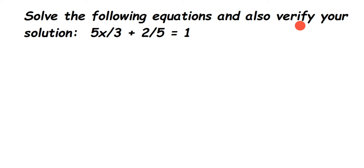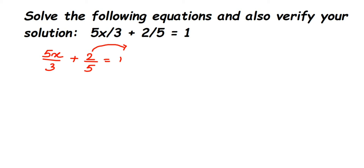Let us write down the question: we have 5x upon 3 plus 2 by 5 is equal to 1. Now we have to find out the x value. What I'm going to do is first transpose the 2 by 5 to the other side — I'm going to bring all the constants to one side. So it will become 5x upon 3 is equal to 1 minus 2 by 5.